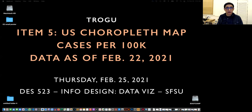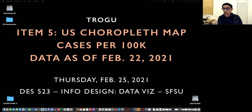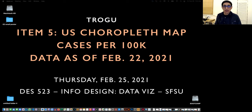Hi everyone, Pino Trogo again from San Francisco State, and this is the information design class, data visualization. We're going to do item number five in the layout sketch for project number two about the coronavirus — a simple colored choropleth map using cases per 100,000, because otherwise states with lots of cases would just look worse than states with few. The key here is per capita, or per 100,000.